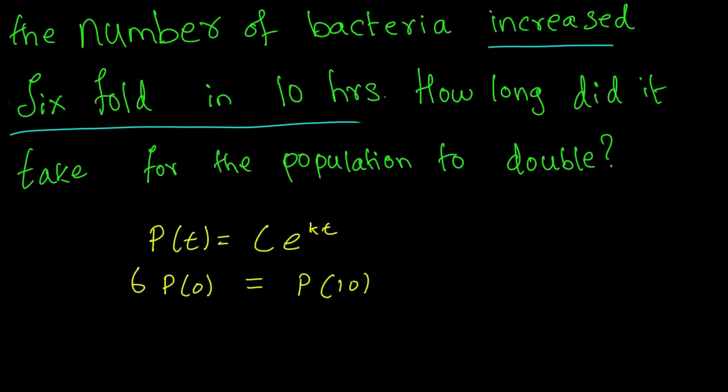So let's just plug in what we know P(t) to be. In this case, P(0) is just going to be C times e to the 0. So that's just going to be 6 times C on the left-hand side. And on the right-hand side, this is going to be C times e to the K times 10. And we have this equation that we can work with.